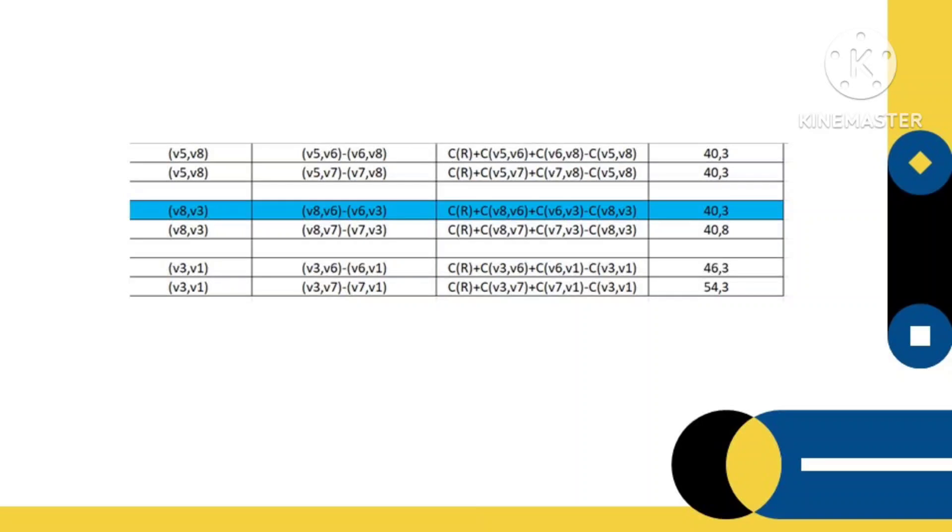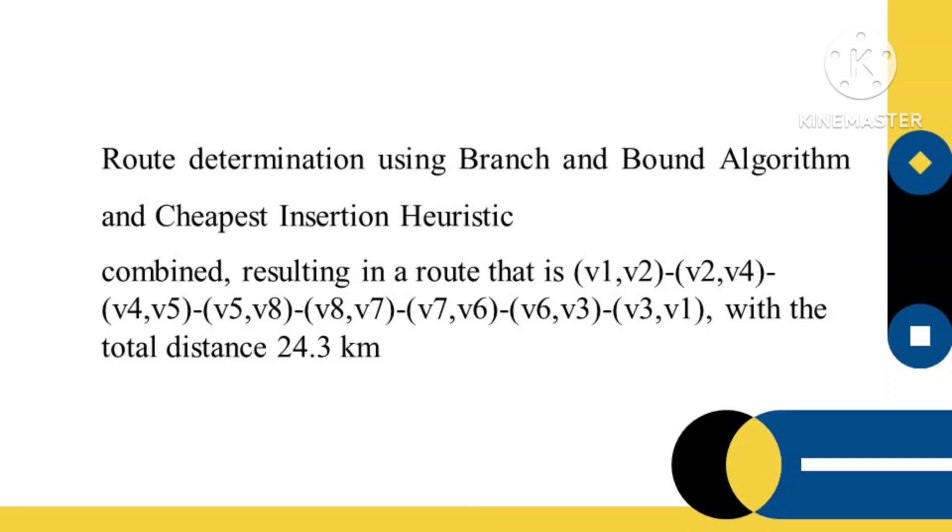We will discuss the route of transporting goods from point V1 then moving to each point, namely points V2 to V8 and returning to point V1. Each point is traveled only once except the start and end points.